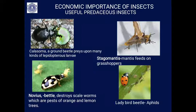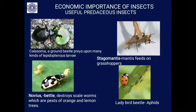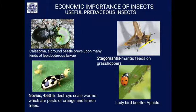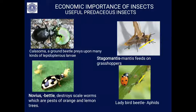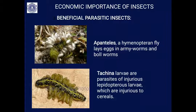Some insects are predacious and are friends of human life. The ground beetle Calosoma preys upon many kinds of lepidopteran larvae that are pests on agricultural crops. Similarly, the mantis Stagomantis feeds on grasshoppers, which are pests on several crops. The Novius beetle, a type of ladybird beetle, destroys pests on orange and lemon trees. The ladybird beetle feeds on aphids — common plant lice on many crops — thereby indirectly helping farmers.